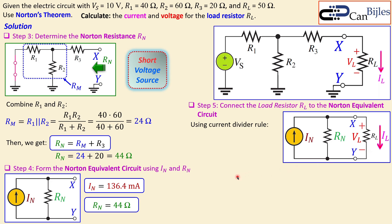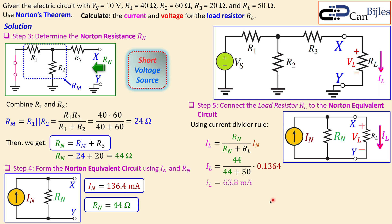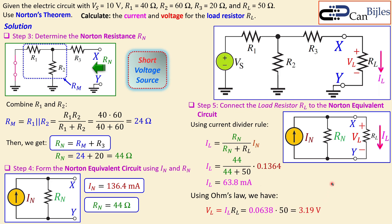Using the current divider rule, IL = (Rn / (Rn + RL)) × In = (44 / 94) × 136.4 mA = 63.8 milliamps — exactly the same result as with Thevenin's theorem. Then using Ohm's law, VL = IL × RL, giving approximately 3.19 volts, also matching the Thevenin example result.